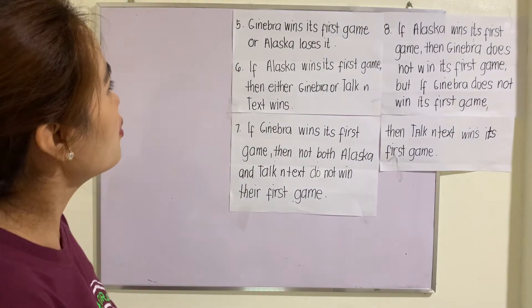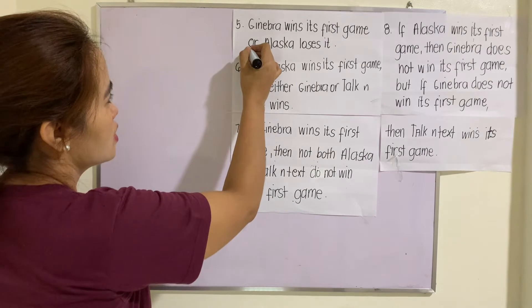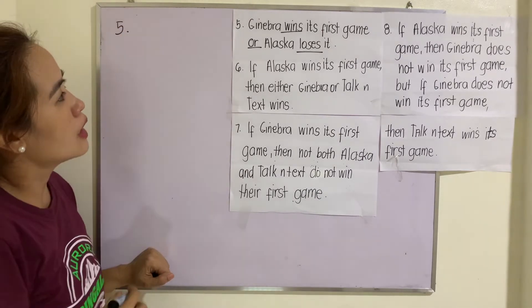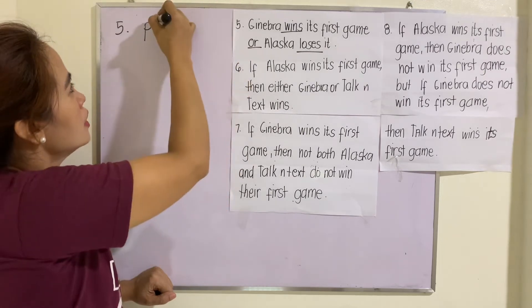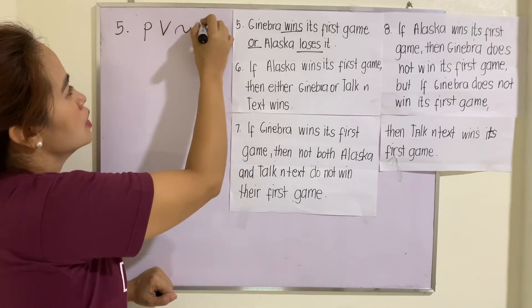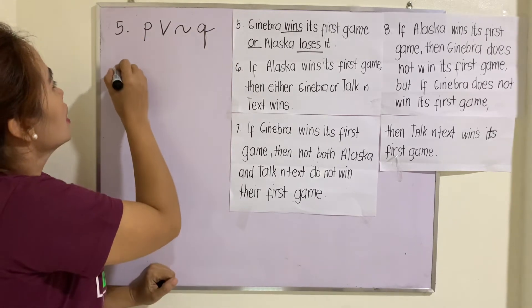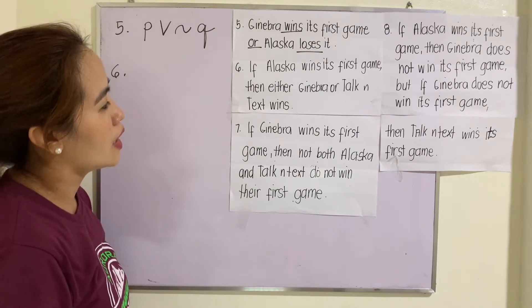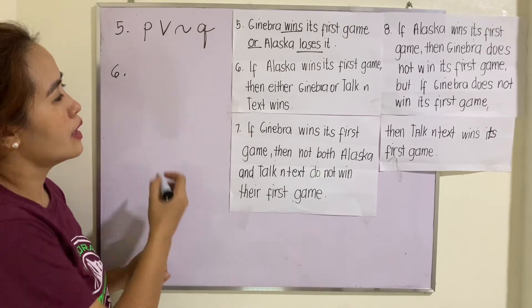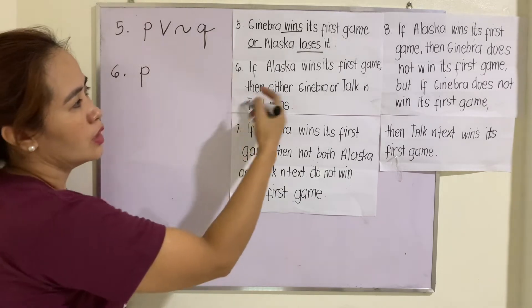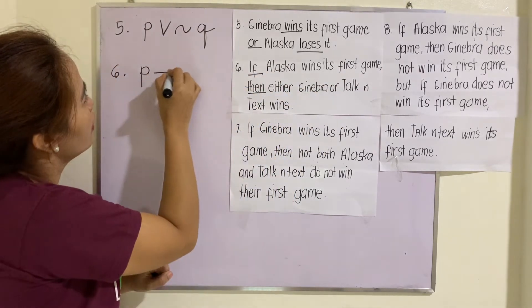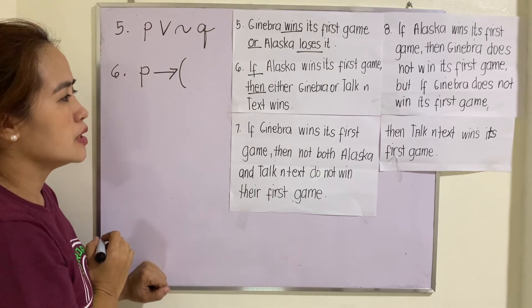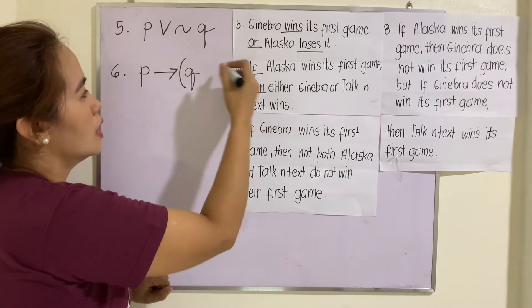Example five: 'Ginebra wins its first game or Alaska loses it.' The operator is 'or,' and 'loses' implies negation, so this translates as P or not Q. Example six: 'If Alaska wins its first game, then either Ginebra or Top Intex wins.' This is an 'if...then' conditional. The consequent 'either Ginebra or Top Intex wins' is enclosed in parentheses, giving P implies (Q or R).